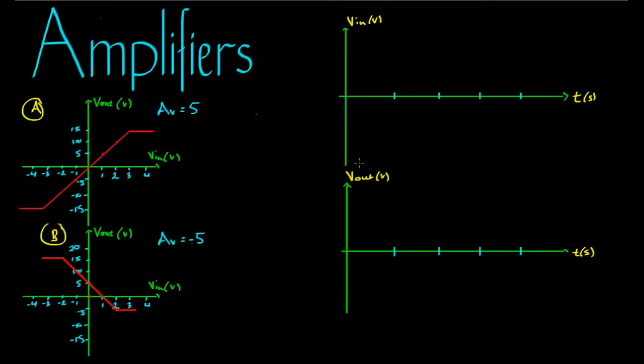Hi everyone. Welcome to our lesson on amplifier example questions. An amplifier is basically a device that takes in one voltage and spits out another. We're going to look at two amplifiers here — amplifier A and amplifier B — and the behavior of these amplifiers can be shown using a graph of V in versus V out.